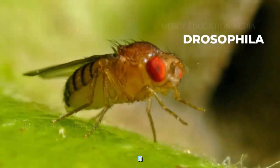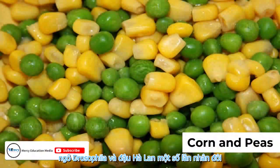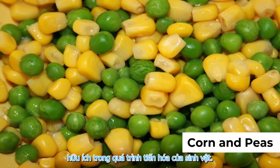In Drosophila, corn and peas, a number of duplications are reported. Some duplications are useful in the evolution of the organism.